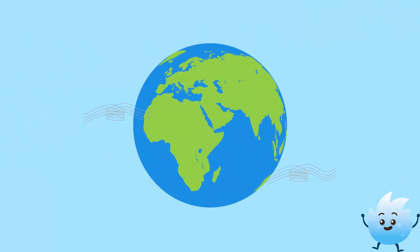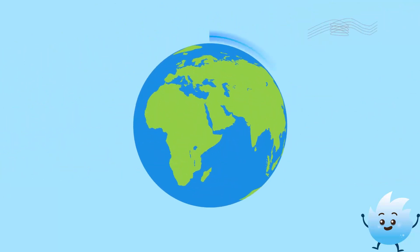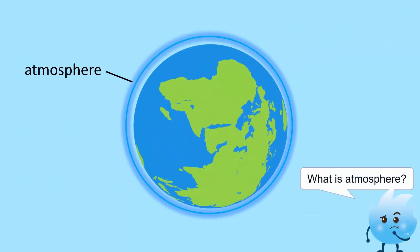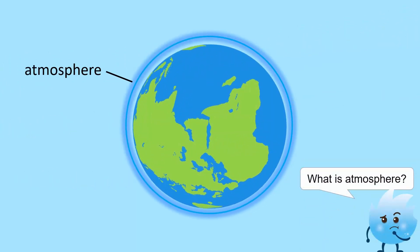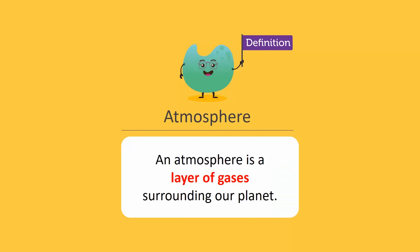Air is everywhere. Our Earth is surrounded by a blanket of air called the atmosphere. An atmosphere is a layer of gases surrounding our planet.